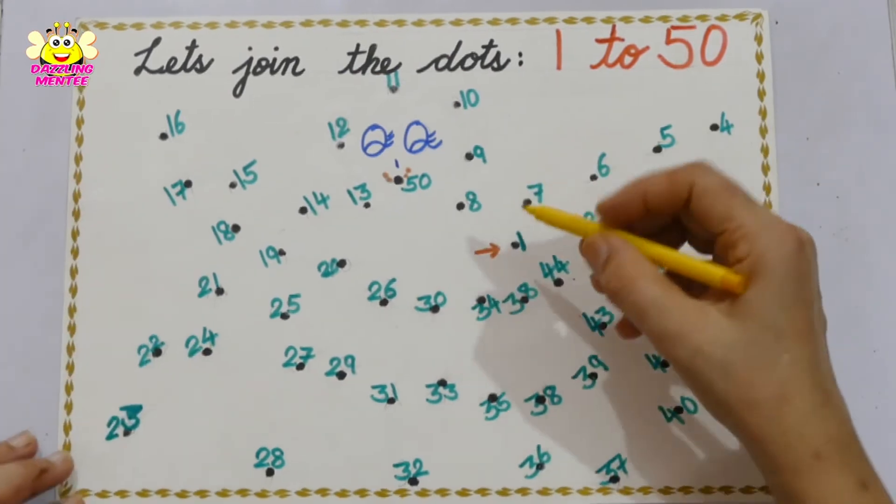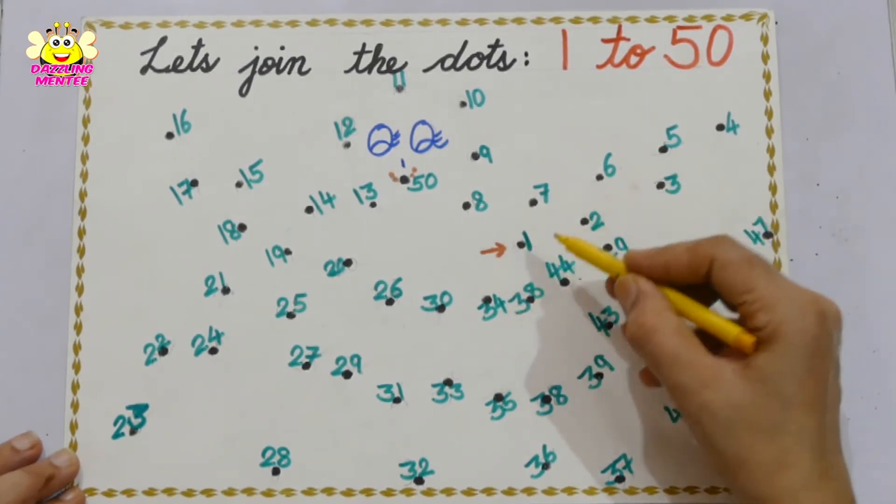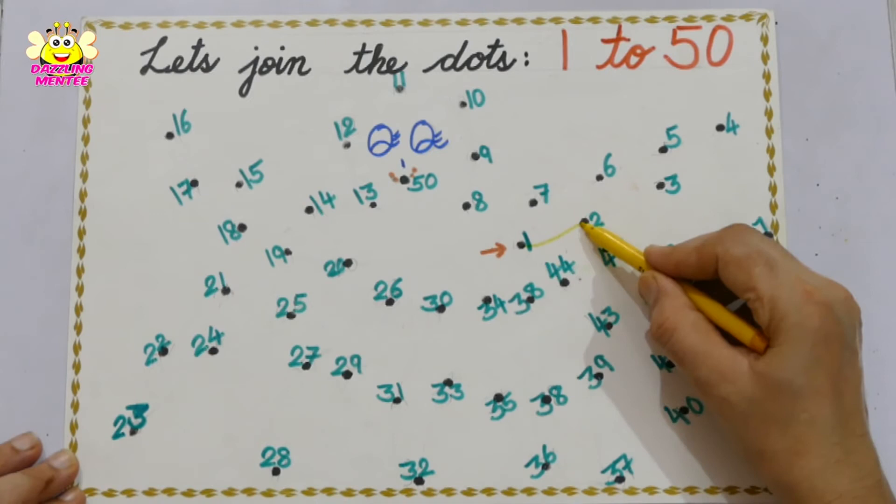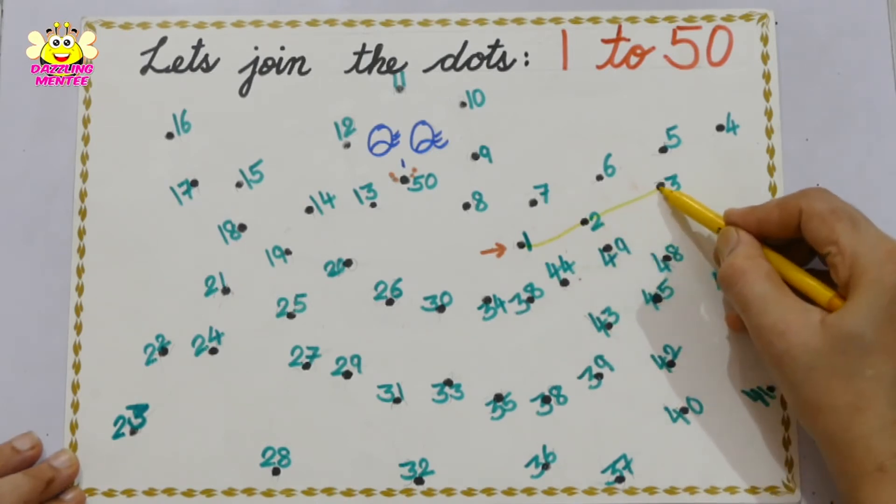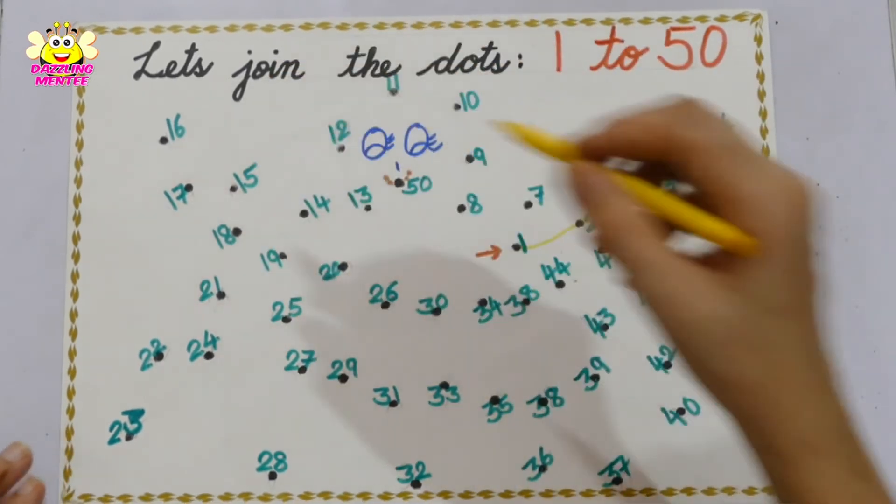Where is one? Here is one. See, I've given an orange arrow. Start with 1 dot, 2 dot, 3 dot, 4, so this way, dot to dot.